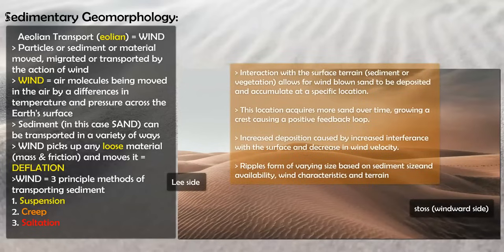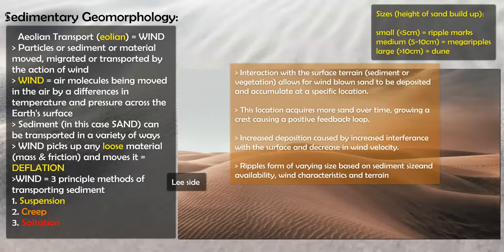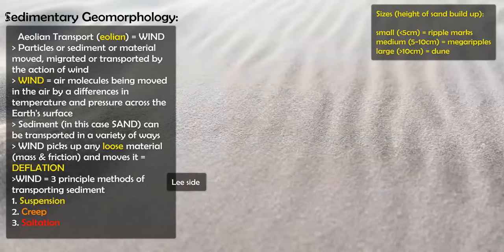Ripples come in different sizes. The smaller ones are called ripple marks — below five centimeters in height. If they grow above five centimeters, they're called mega ripples, from five to ten centimeters. Anything above ten centimeters is called a dune, which we know as a sand dune. The largest dune is in Argentina at 1,234 meters above sea level, so dunes can range from 10 centimeters all the way up to thousands of meters — which is insane.